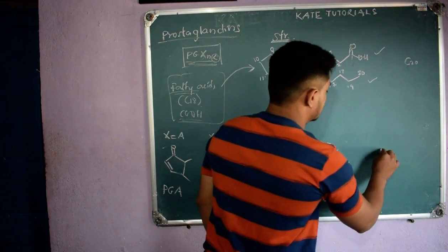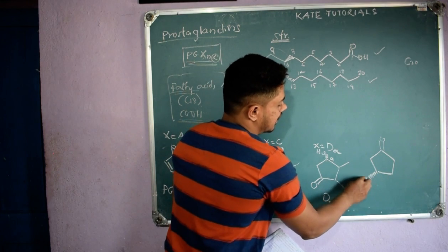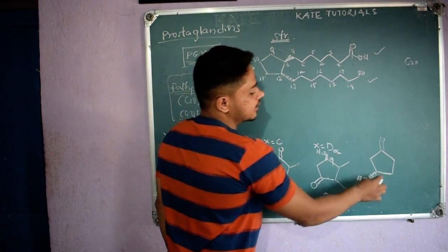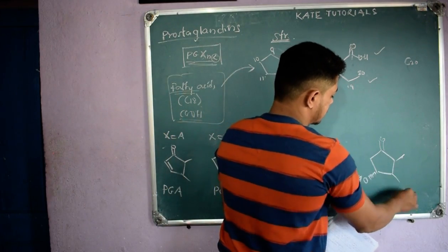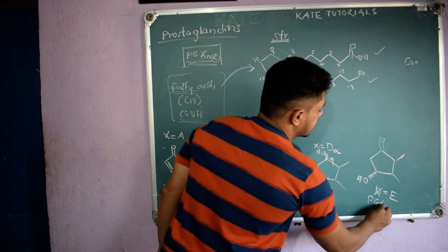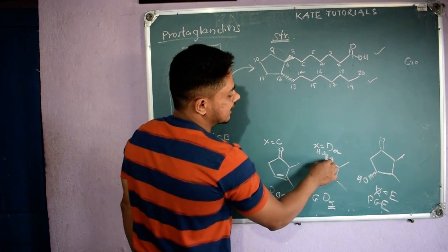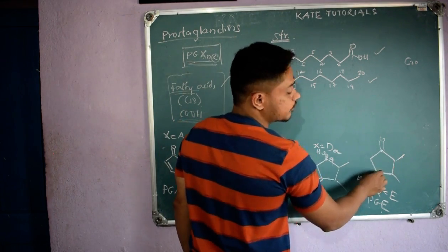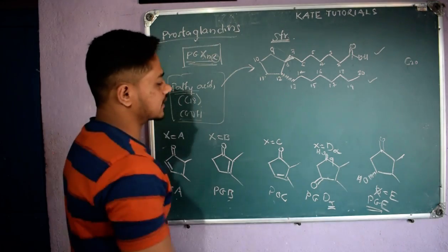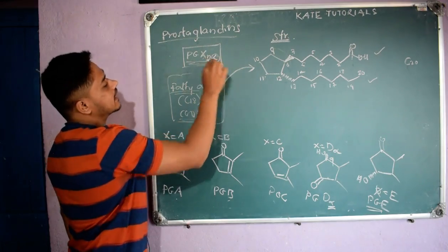For X equals E, the structure of the cyclopentane ring has a ketone group with stereochemistry at C11. Since only C9 stereochemistry is used in nomenclature, and C9 has no stereochemistry here, alpha or beta is not mentioned. So the name is simply PGE. The side chains remain the same, and N (the number of pi bonds in the side chains) will be discussed shortly.